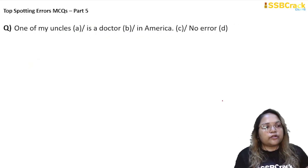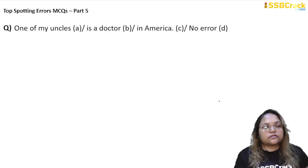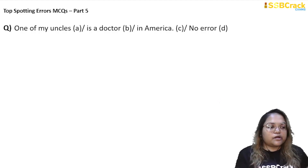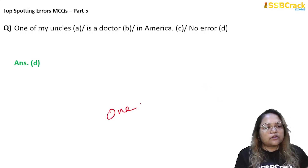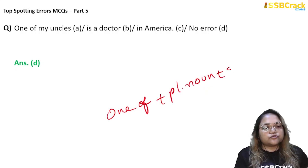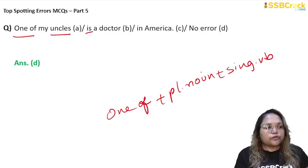Next question: 'One of my uncles is a doctor in America.' If you translate this sentence — among my many uncles, one uncle is a doctor in America — you will find no error, and the answer is D. This follows the rule of 'one of': after 'one of,' a plural noun is used, and the verb that follows is singular. Here, 'uncles' is plural and 'is' is singular — the rule is correctly followed. So the answer is D, no error.